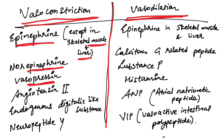Vasopressin, angiotensin II, endogenous digitalis-like substances, and neuropeptide Y are all vasoconstrictors.